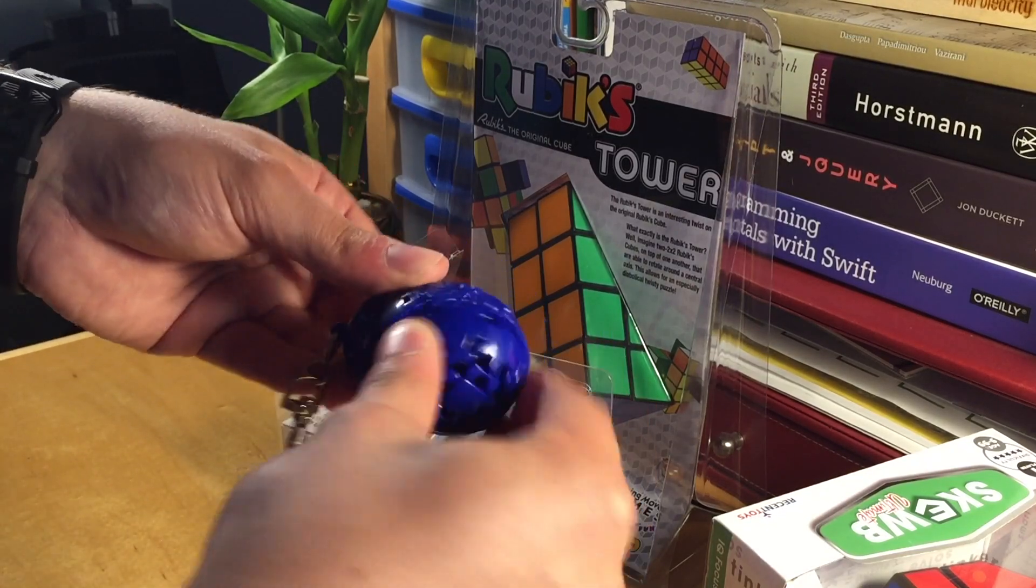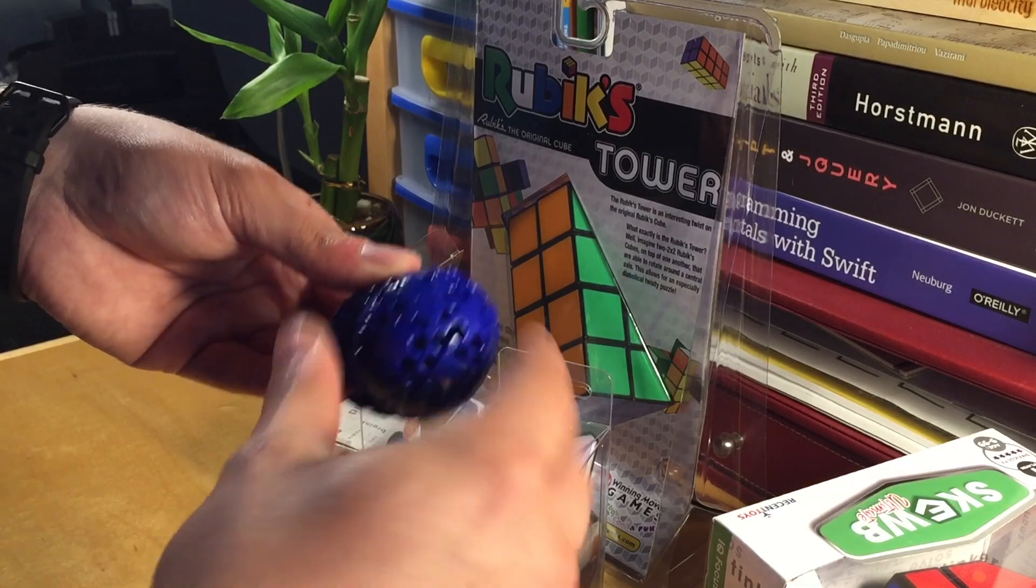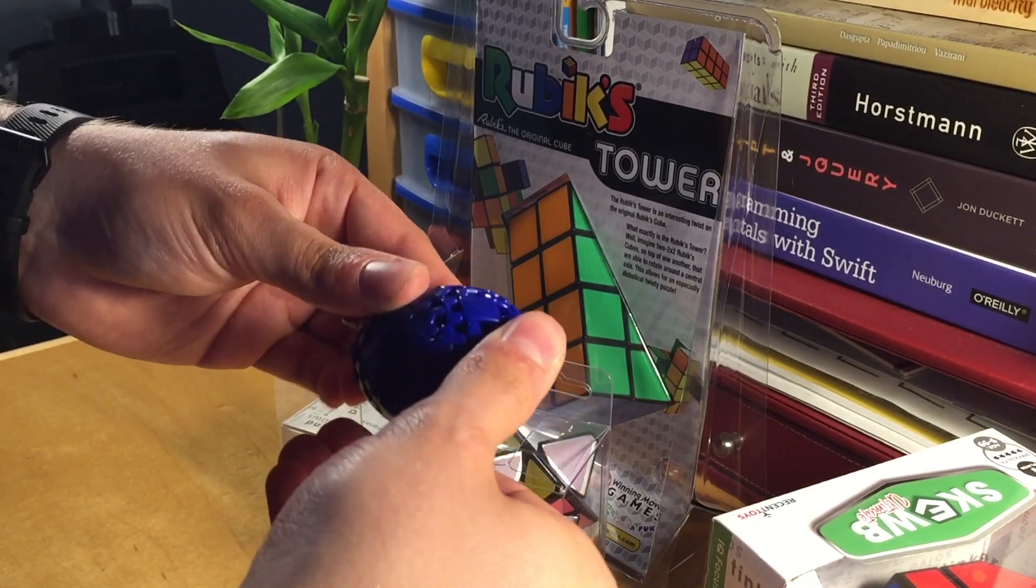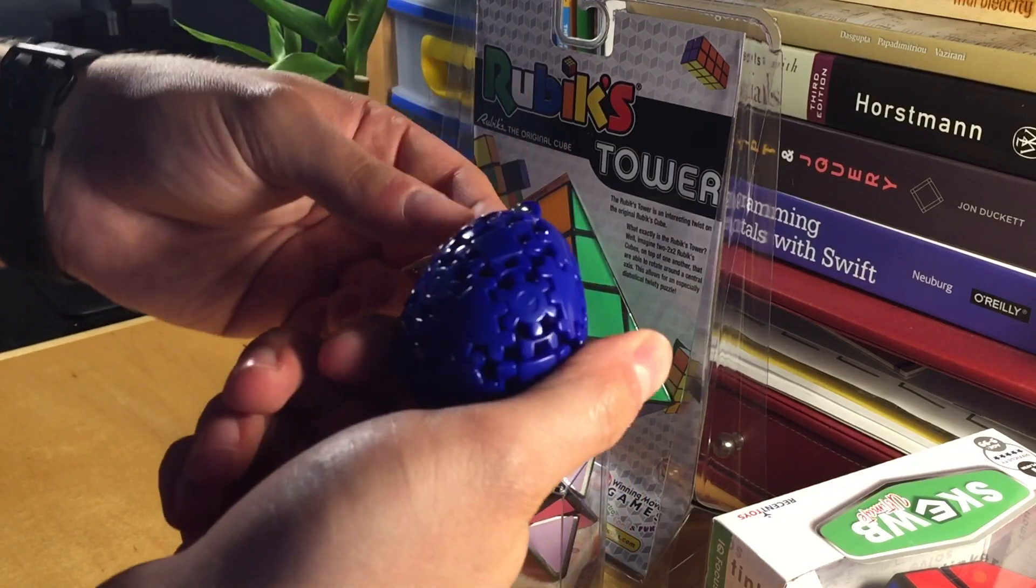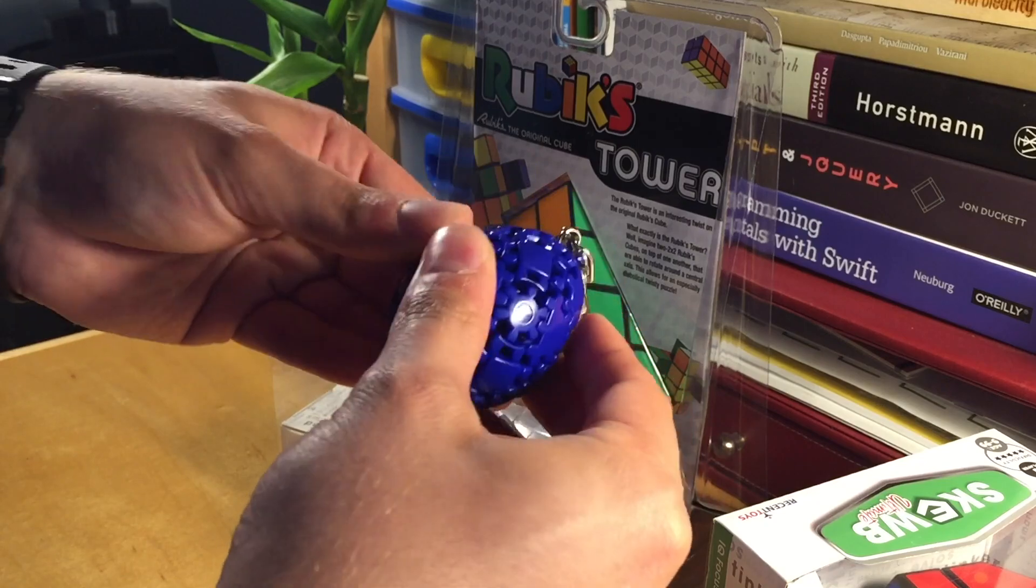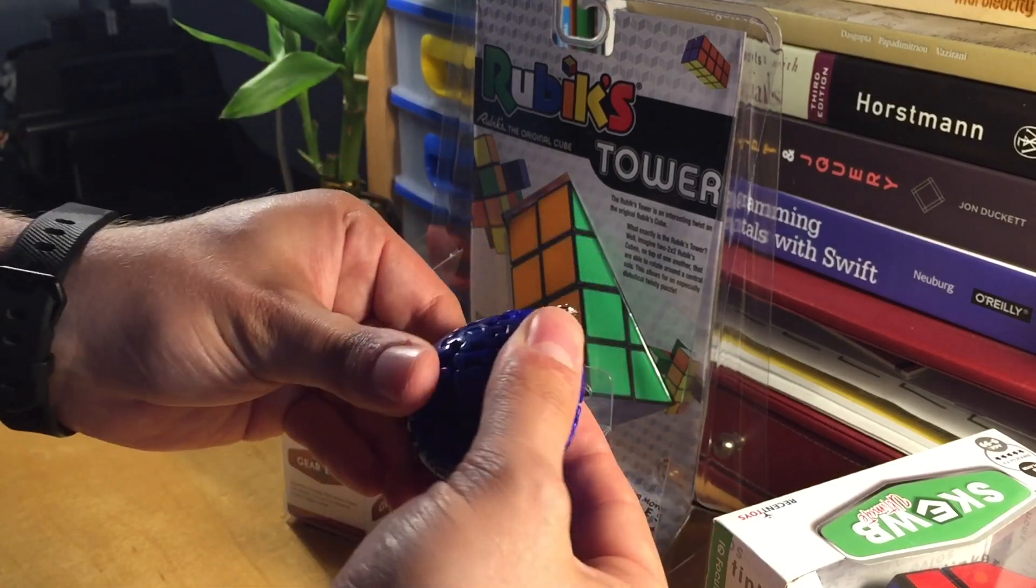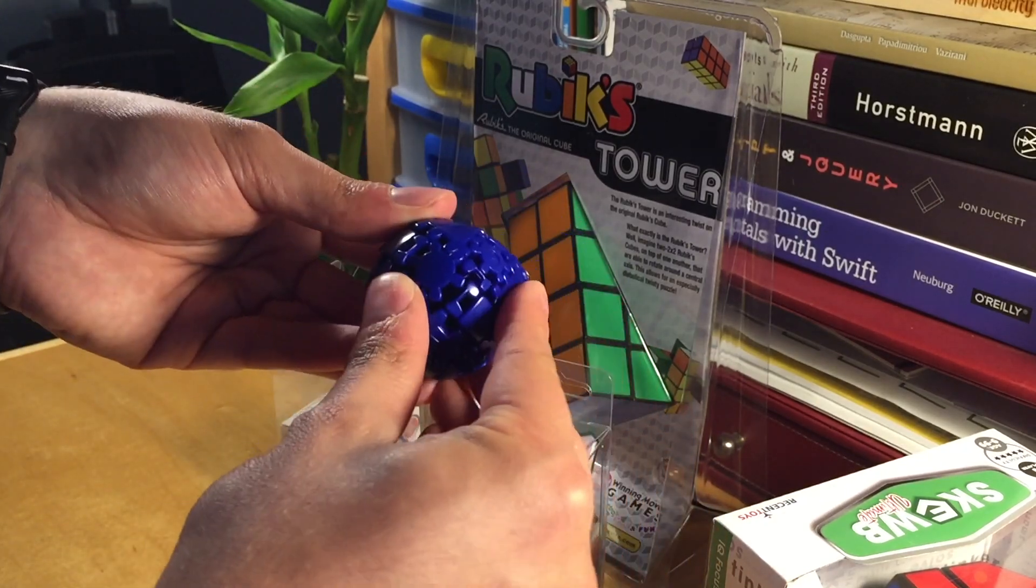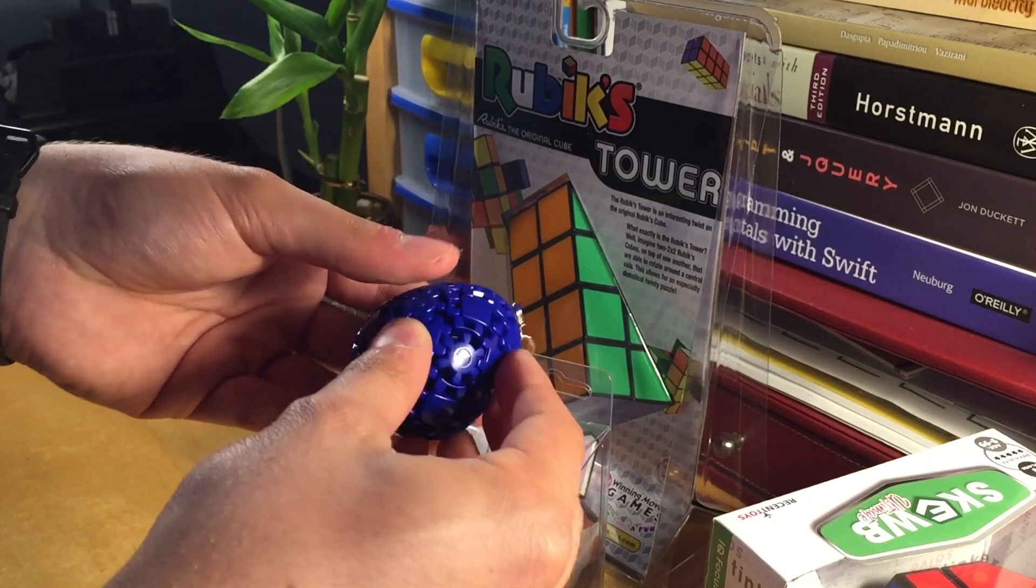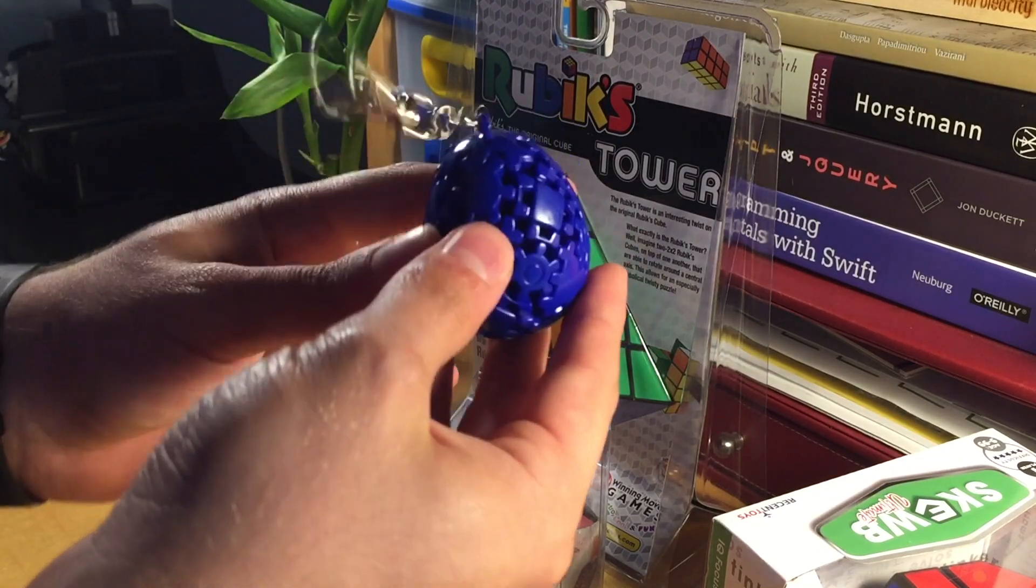It's basically a gear cube in the shape of an egg in keychain form, so you can snap this onto your backpack or something and carry it around with you when you go to classes or if you're commuting. It doesn't really corner cut, it's extremely stiff and could use a little bit of lubrication.